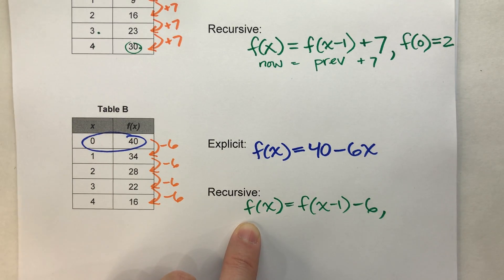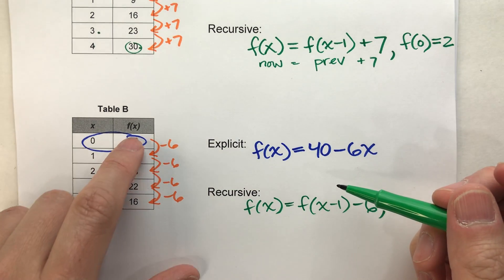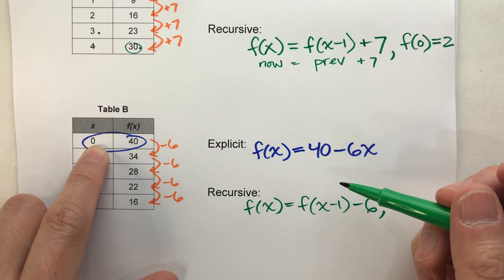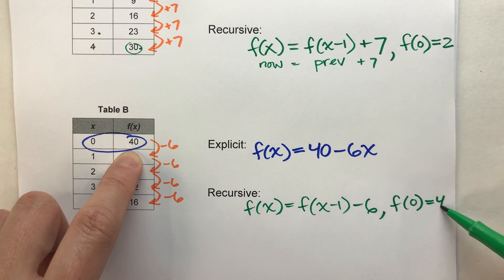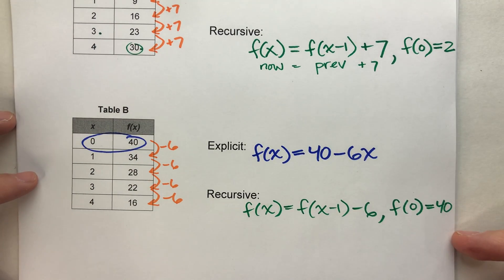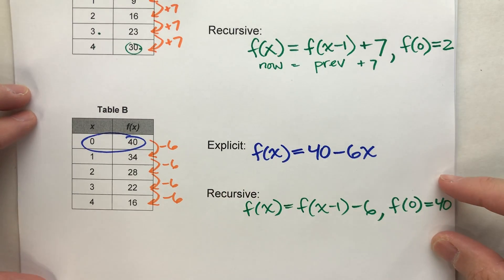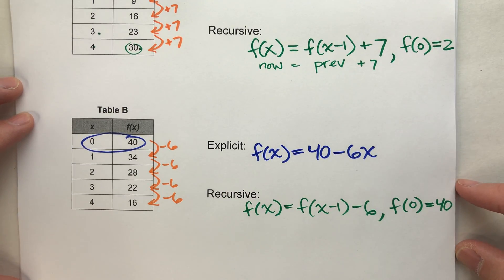Now, put a comma there because we also need to say where the sequence started. When x was 0, f of x was 40. There's our starting value. And that is our recursive equation.